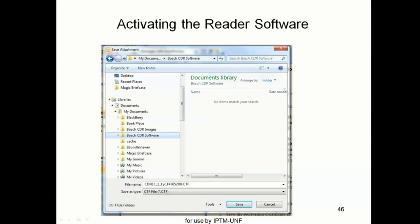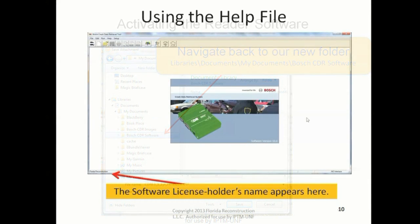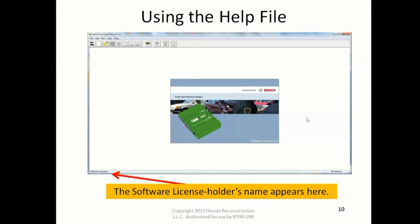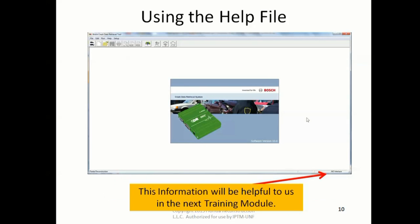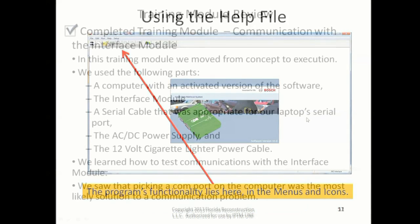A new window opens that gives us a chance to navigate to the save location. The software license holder name appears in the lower left, and there's some information that appears in the lower right. It's probably hard to read — it says 'no interface.' It doesn't mean anything to us right now, but it will be helpful in the next training module.